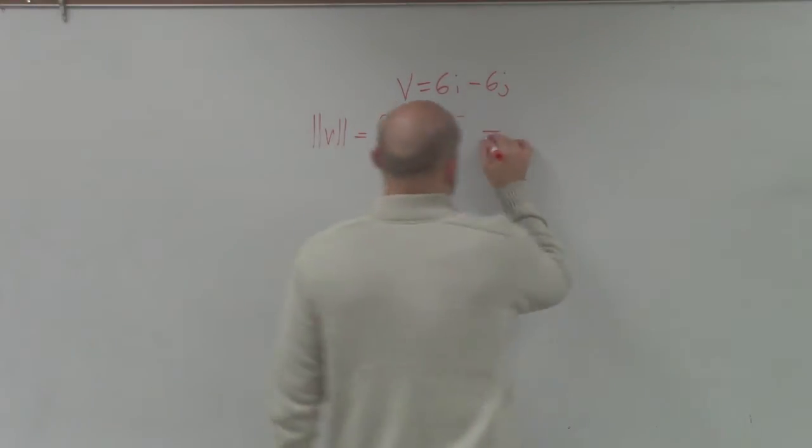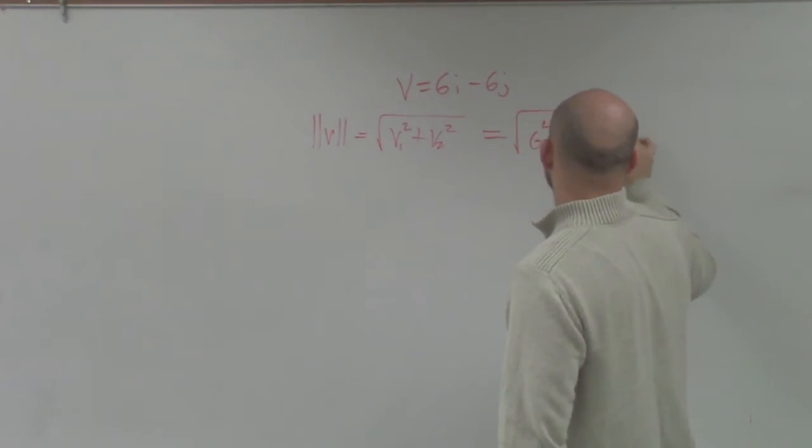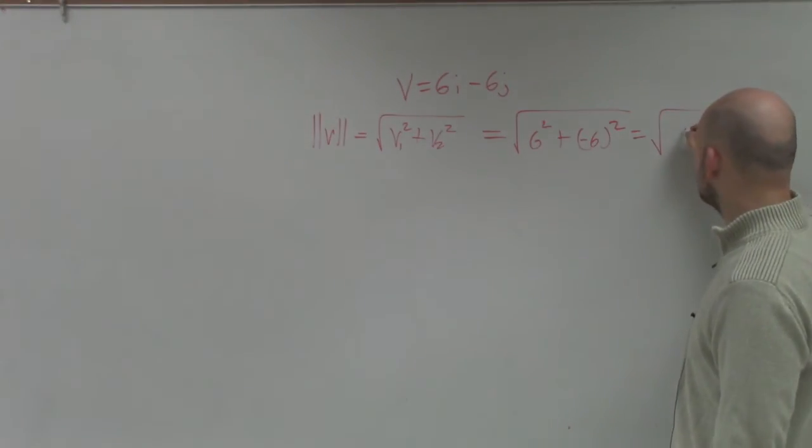So to find the magnitude, we just take the square root of v1 squared, which is 6 squared, plus negative 6 squared, which equals the square root of 72.